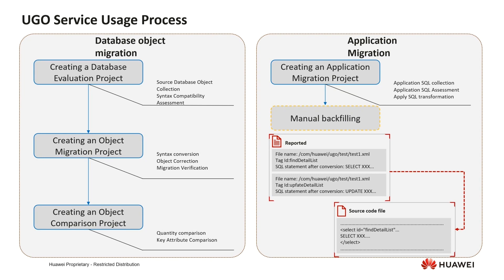Let's look at the overall UGO Service usage process. The overall process consists of two end-to-end processes. The first step is to migrate database objects. You need to create a database evaluation project. The main purpose of this step is to collect original database objects and perform evaluation of compatibility between databases based on the collected objects.